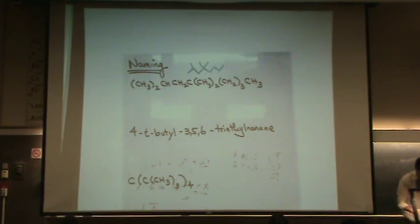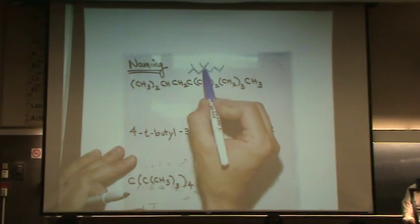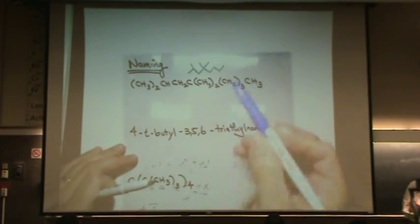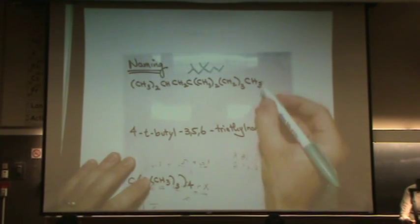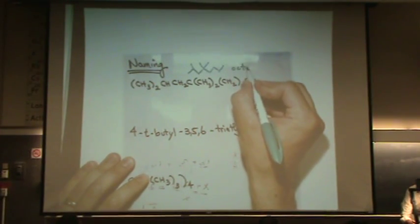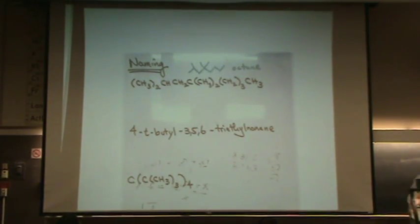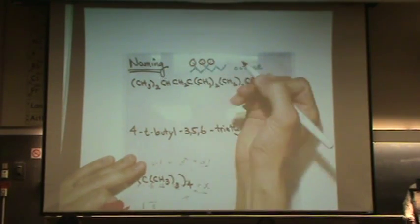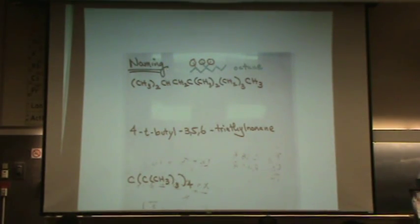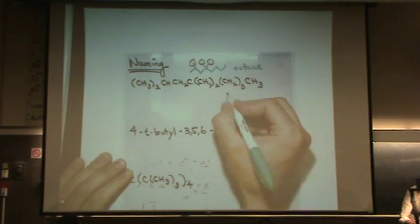So that's the condensed drawn as a bond line. Now I'm going to name it. I need to find the longest chain. That's one, two, three, four, five, six, seven, eight. So that has to be an octane. Let's see the branches. I'll circle the branches in a different color. There's my three branches. They're all methyls, so that would be a trimethyl.